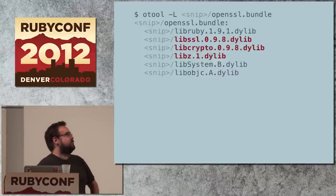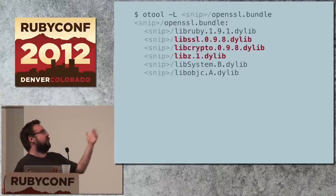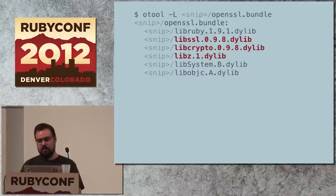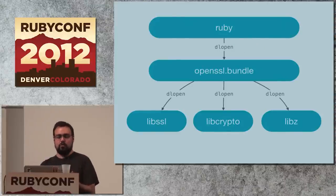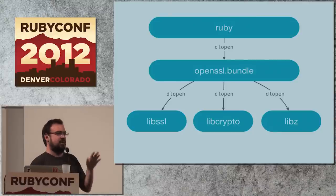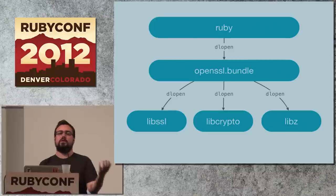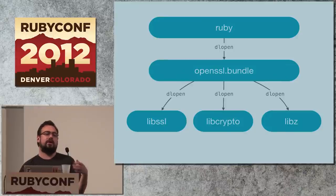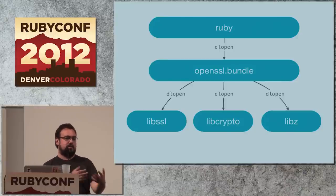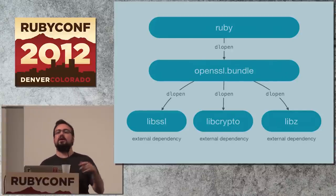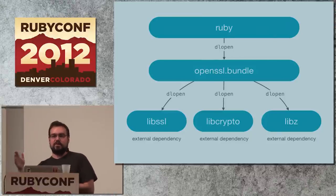You can just say 'please tell me what the dependencies of openssl.bundle are' and you see the same list: libssl, libcrypto, libz. At runtime, you load Ruby and it dynamically links openssl.bundle — that doesn't introduce problems because openssl.bundle is part of Ruby. But libssl, libcrypto, and libz are actual external dependencies. When you compiled Ruby, it found them somewhere on the system, and when you run it again it wants to find them in the same place. So based on that, you can start to understand why distributing a binary distribution of Ruby might be a problem.